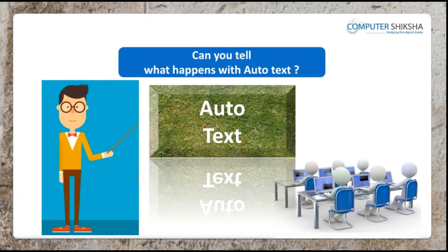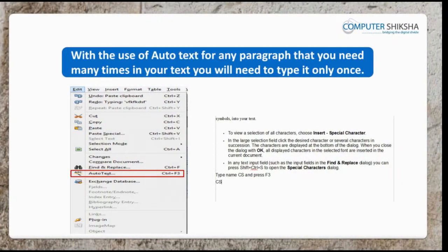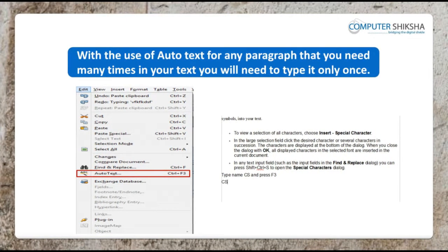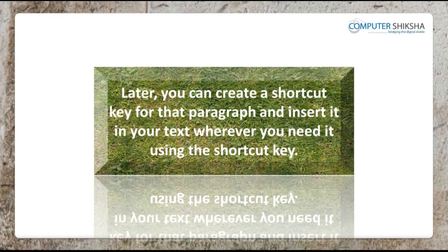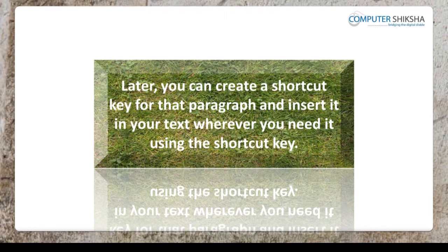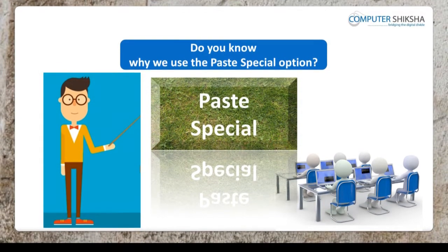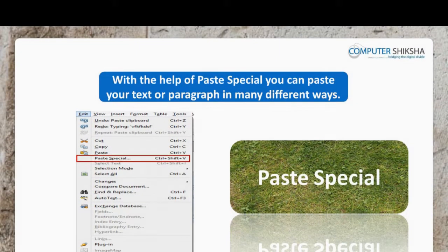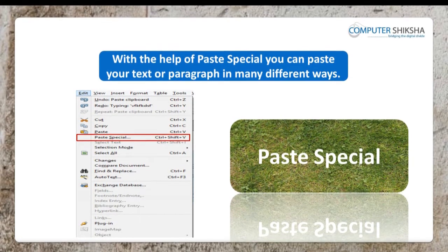Can you tell what happens with Auto-Text? With the use of Auto-Text, for any paragraph that you may need many times in your text, you will need to type it only once. You can create a shortcut key for that paragraph and insert it in your text wherever you need it using the shortcut key. With the help of Paste Special, you can paste your text or paragraph in many different ways.